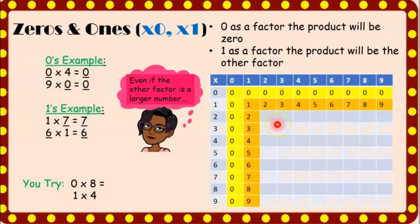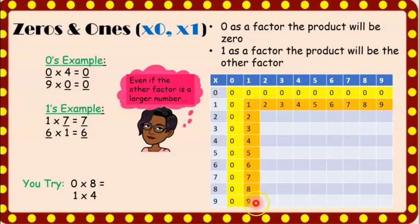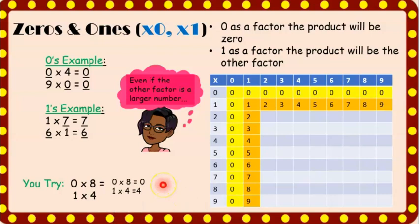Let's take a look at our multiplication chart. The numbers multiplied by zero are all zeros, and the numbers multiplied by one end up being the other factor. Now it's your turn to try — we have zero times eight and one times four. Zero times eight is zero and one times four is four. Let's move on.